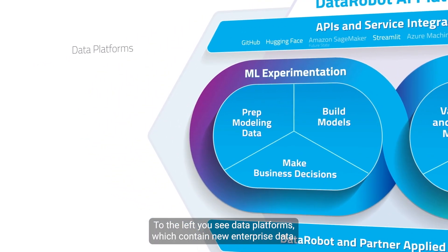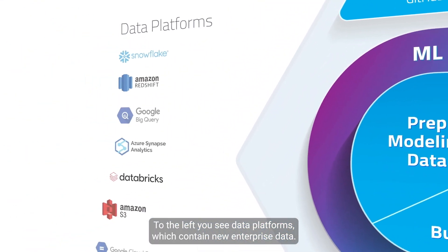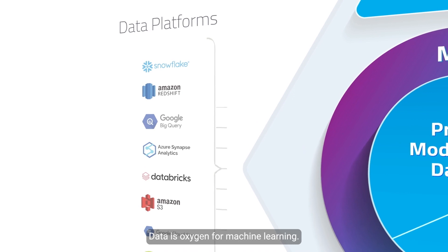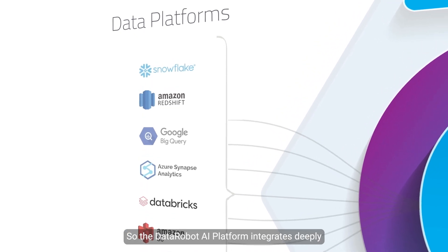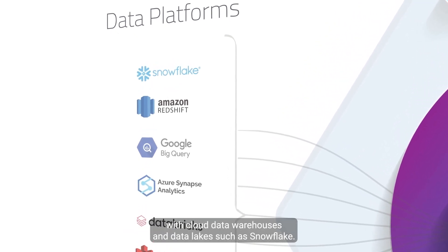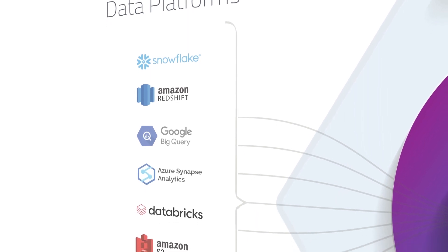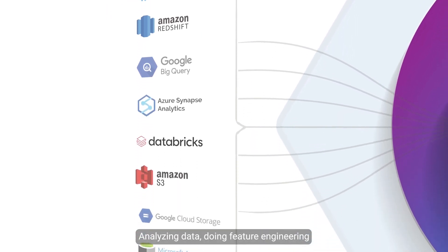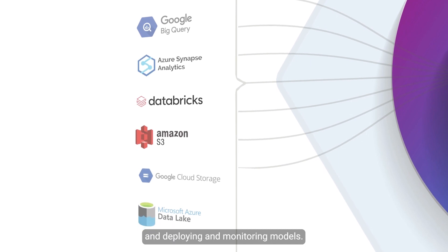To the left, you see data platforms which contain your enterprise data. Data is oxygen for machine learning, so the DataRobot.ai platform integrates deeply with cloud data warehouses and data lakes, such as Snowflake — for analyzing data, doing feature engineering, and deploying and monitoring models.